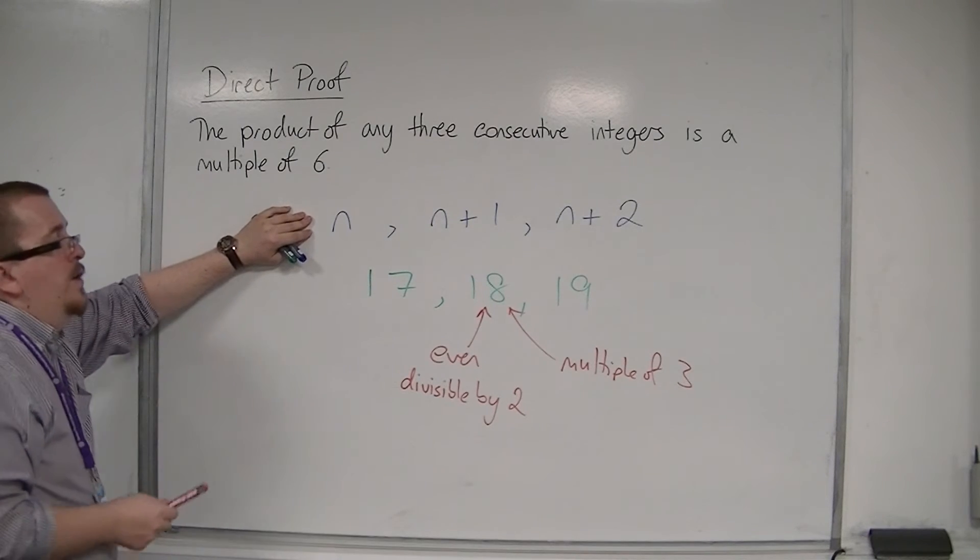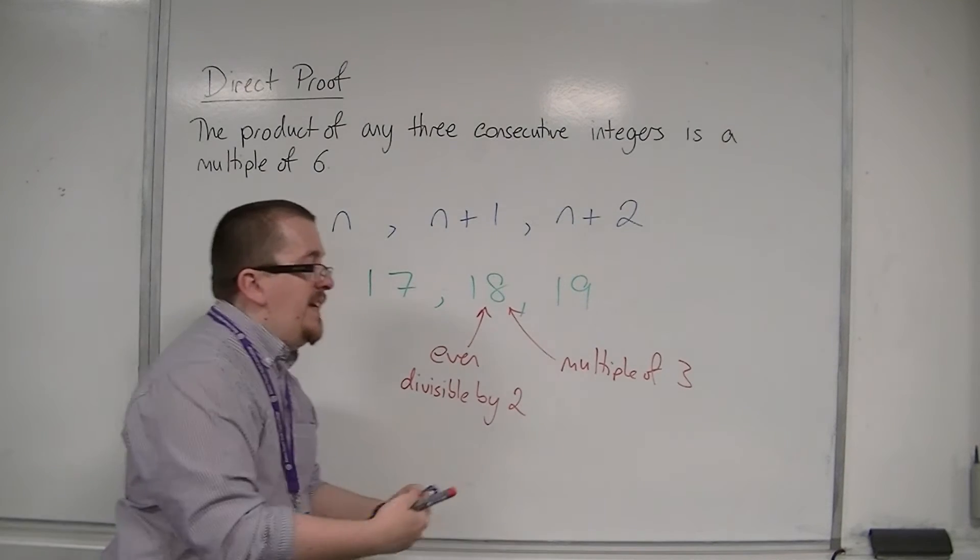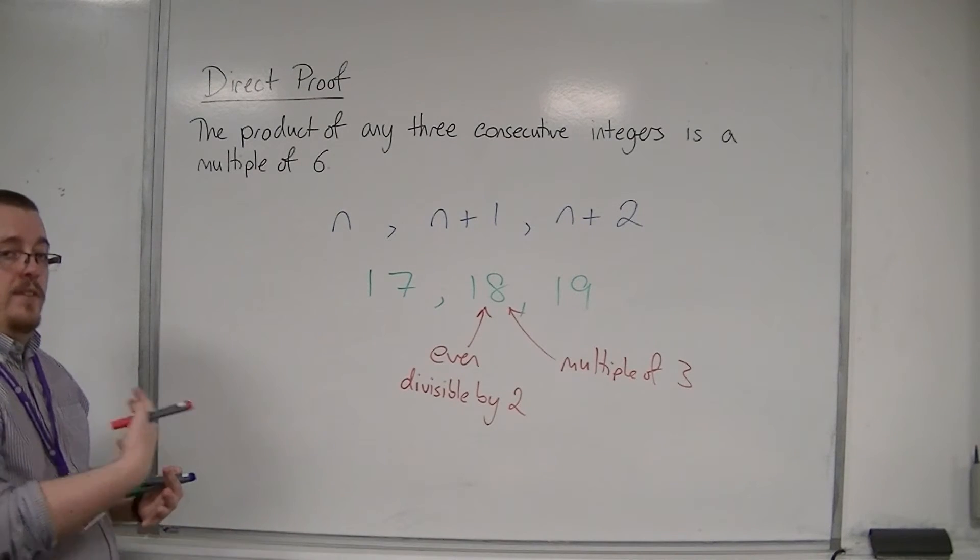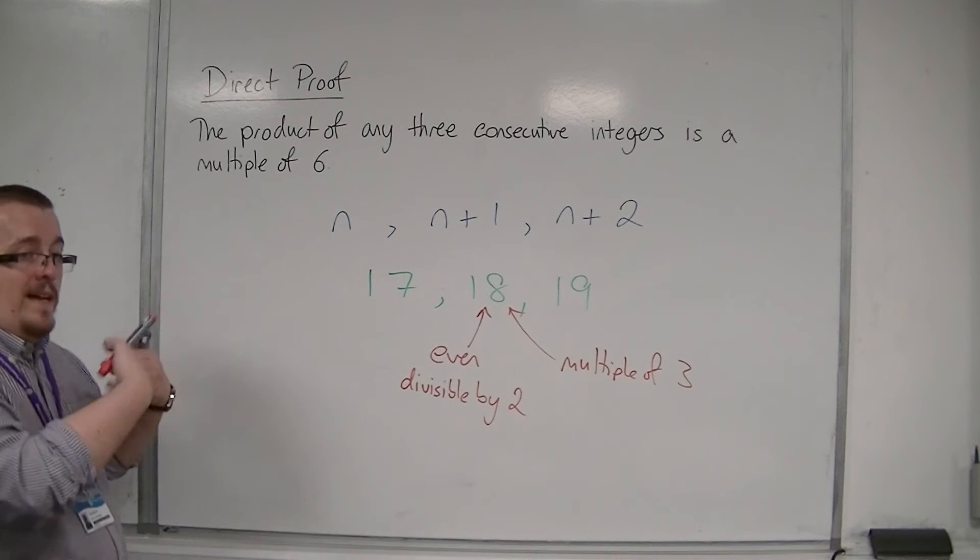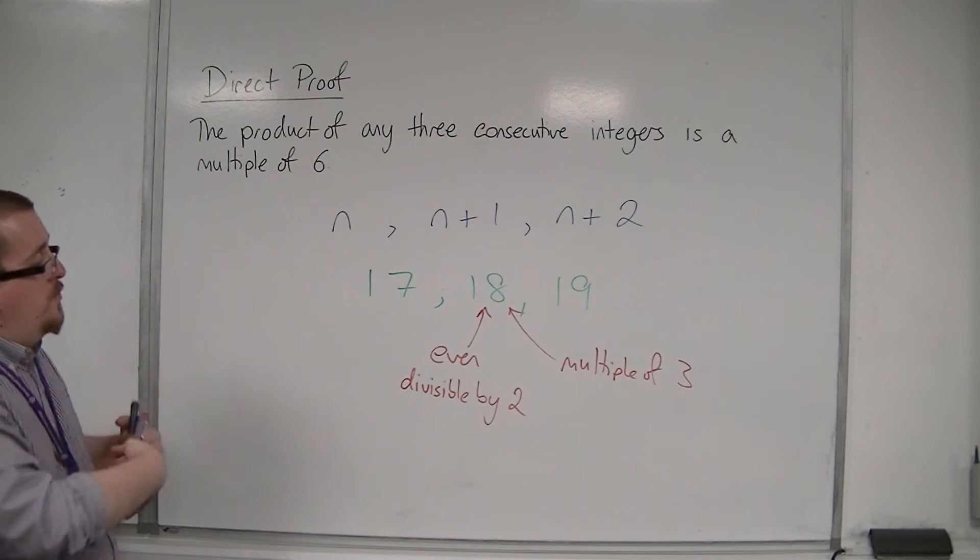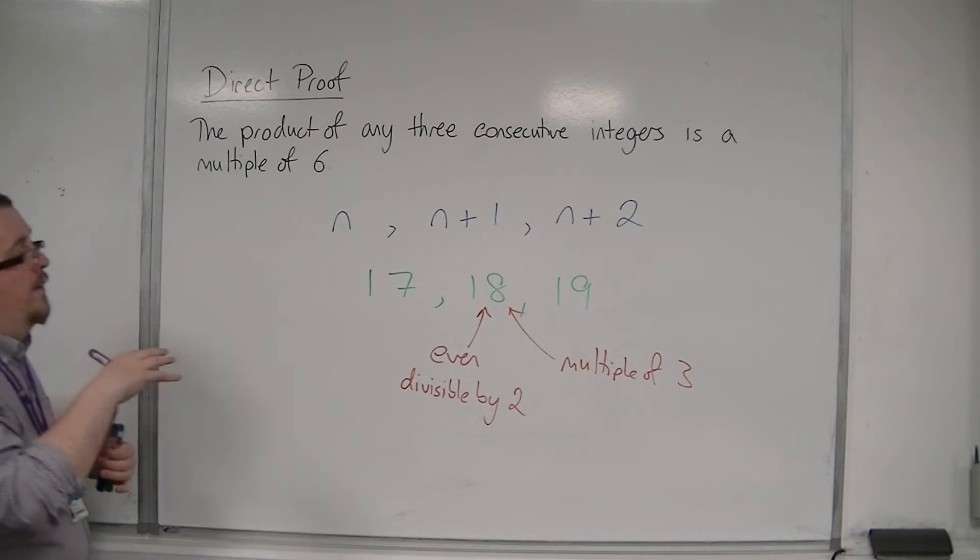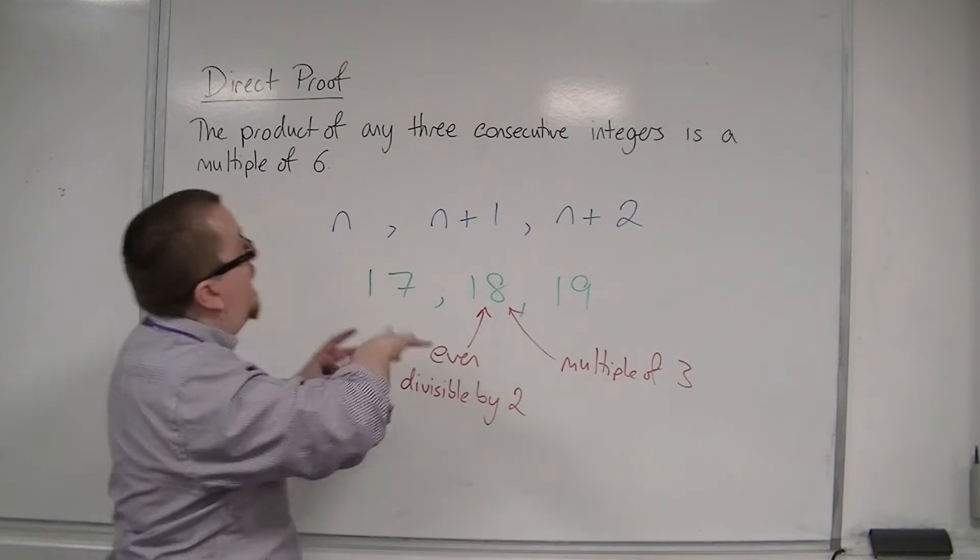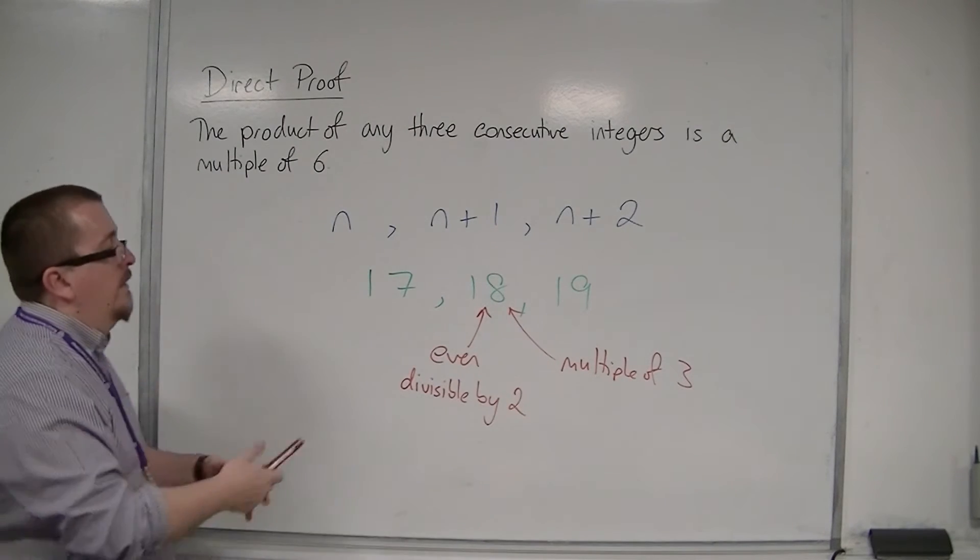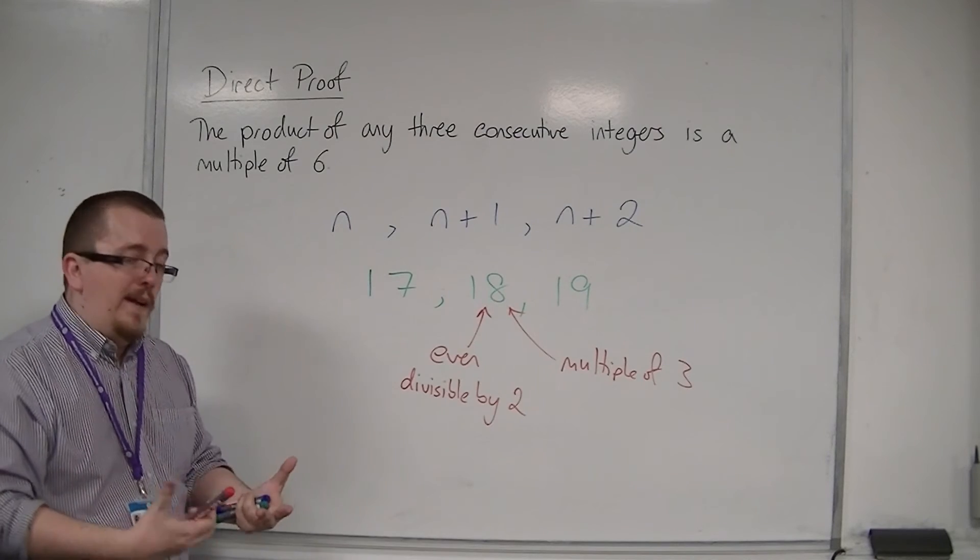Therefore, I would be able to take both two and three out as a factor. And if two and three are factors of this, then six is also a factor.